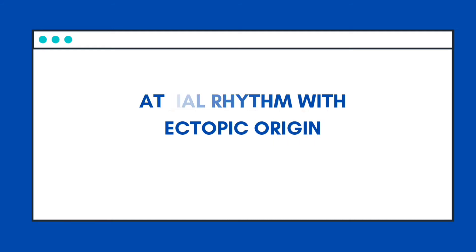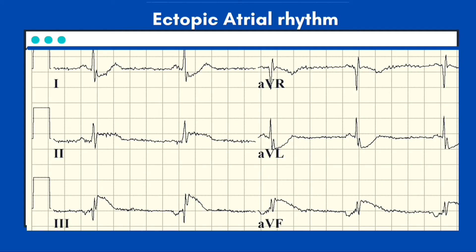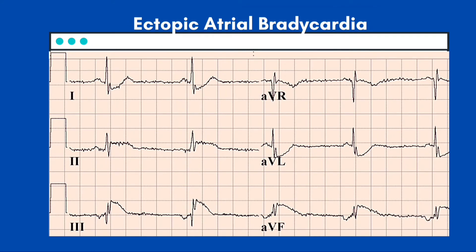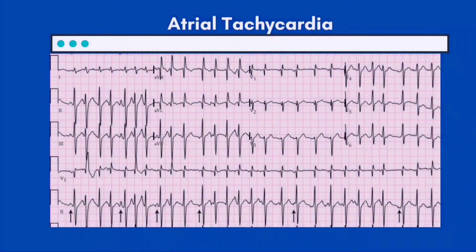Ectopic atrial rhythm is characterized by atrial depolarization at a rate of 60 to 100 per minute from a non-sinus origin, resulting in an abnormal P wave axis. The PR interval may be shortened, particularly when a low ectopic atrial origin is present; if atrial conduction is slow, the PR interval may be normal or even longer. Ectopic atrial bradycardia is identified by an atrial depolarization rate of less than 60 per minute from a non-sinus origin, reflected by an abnormal P wave axis — analogous to ectopic atrial rhythm but slower.